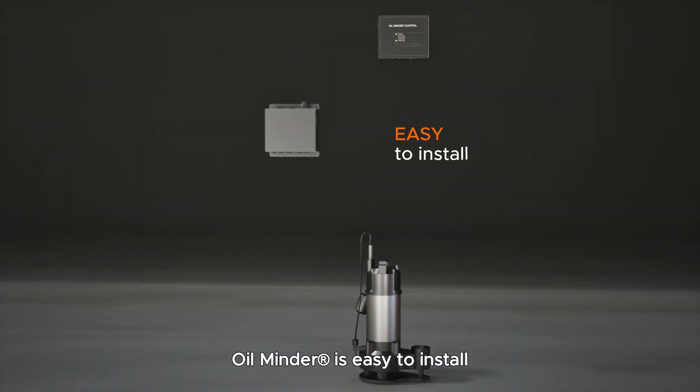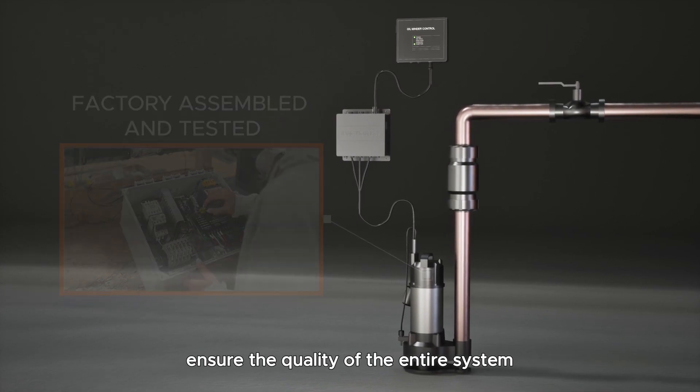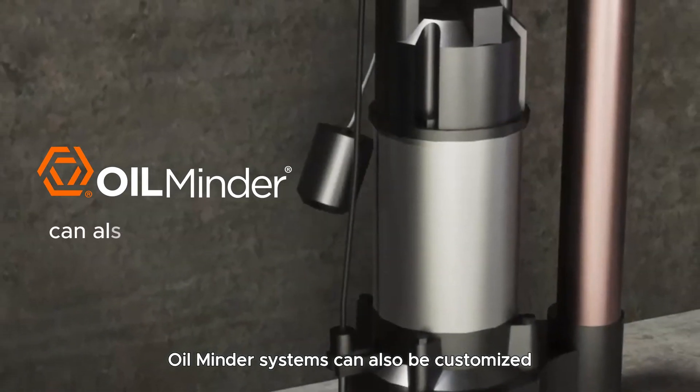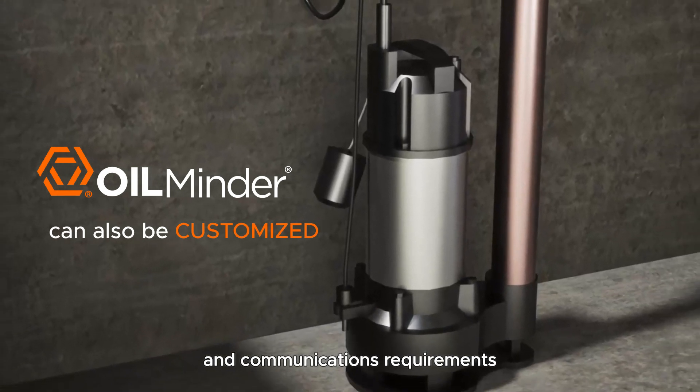OilMinder is easy to install. Factory assembled and tested ensure the quality of the entire system. OilMinder systems can also be customized to meet your unique application conditions and communications requirements.